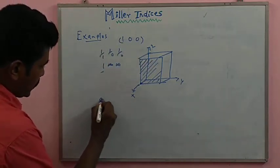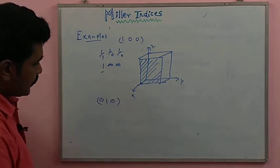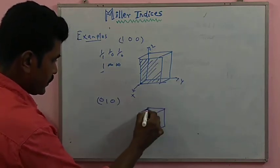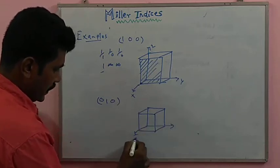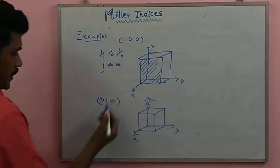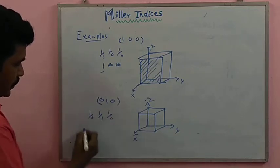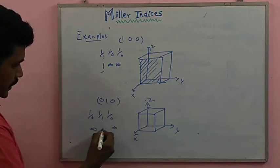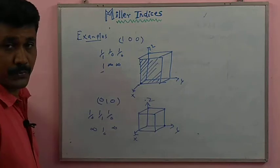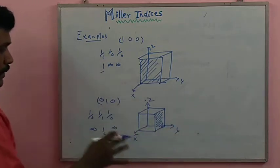Next example: the (0 1 0) plane. For this same cubic structure with x, y, and z axes, the reciprocals are 1/0, 1/1, 1/0 — giving infinity, 1, infinity. The y-axis distance is the maximum value of one unit, while the remaining axes are infinity. We shade that particular portion for the (0 1 0) plane.